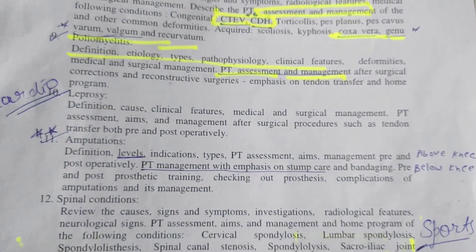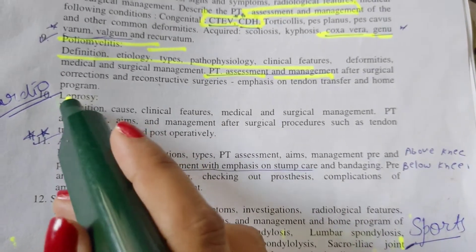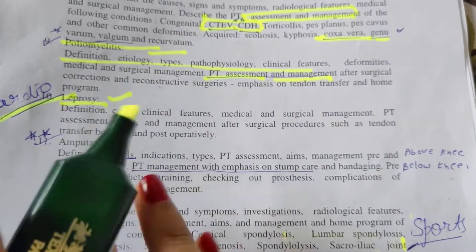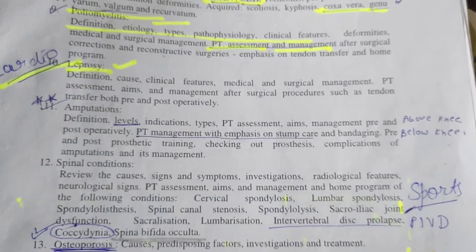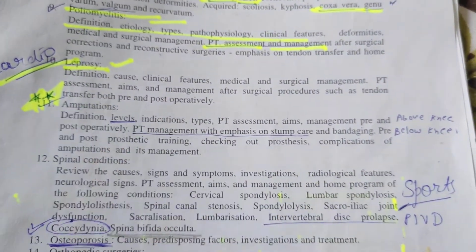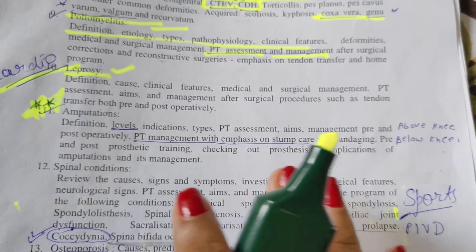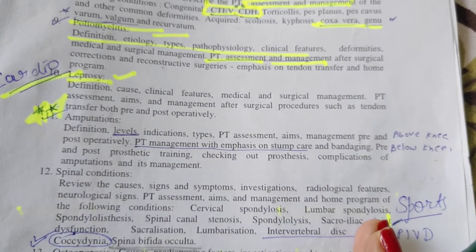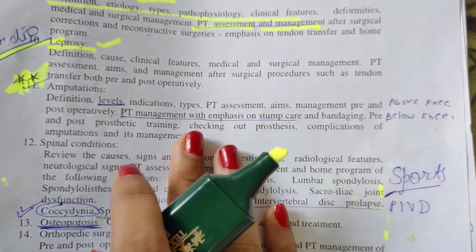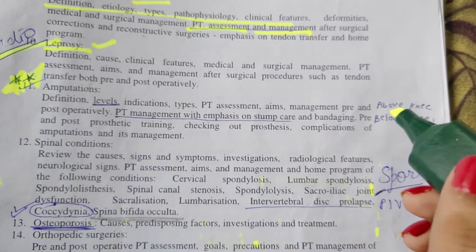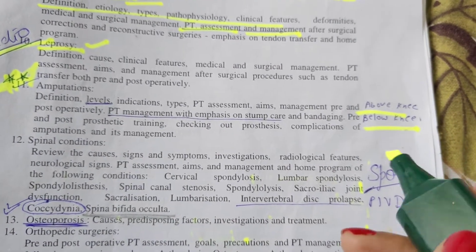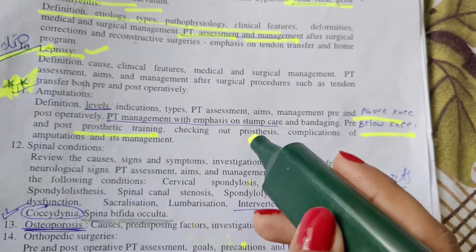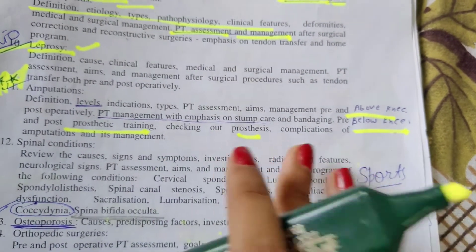Chapter ten is leprosy — you have learned this chapter in your cardio subject and can write the same content here. Amputation is really very important; I think every point needs to be covered. The commonly asked questions are above-knee and below-knee amputation. You have to learn everything about prosthetic training. In rehabilitation you will also learn about orthosis and prosthesis — if you want a video on that, write in the comment section.